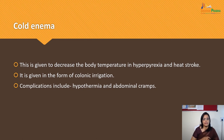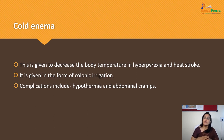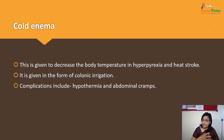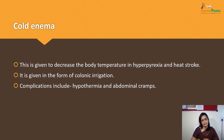Cold Enema is given to decrease body temperature in hyperpyrexia and heat stroke — when there is a sudden rise in body temperature. It is given in the form of colonic irrigation, and complications may include hypothermia and abdominal cramps.